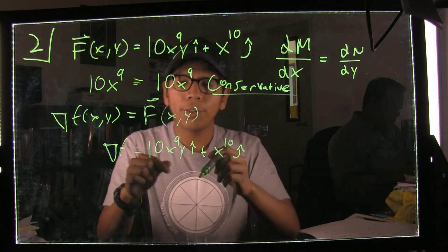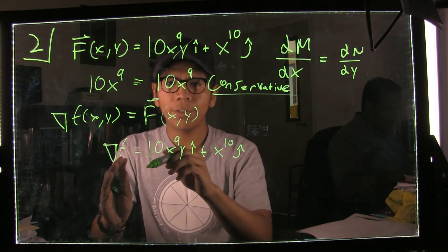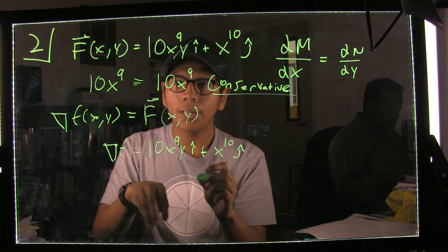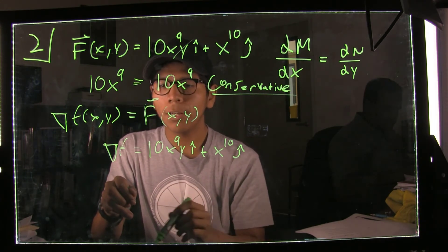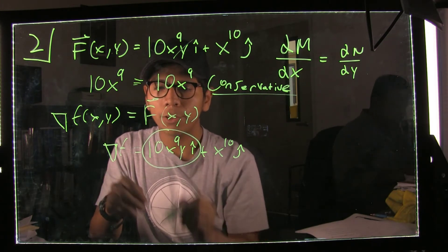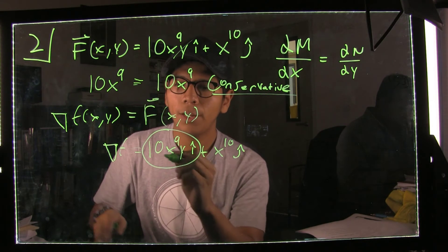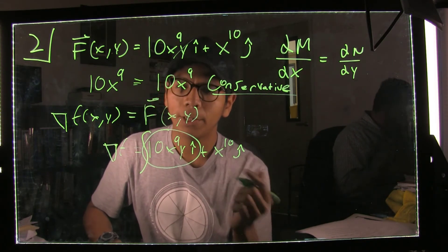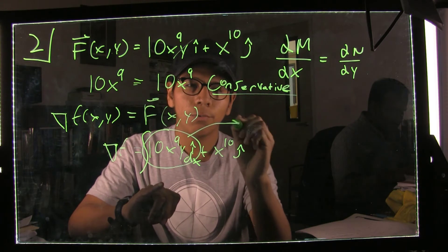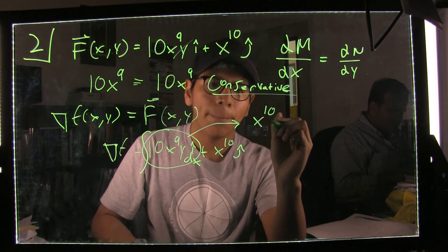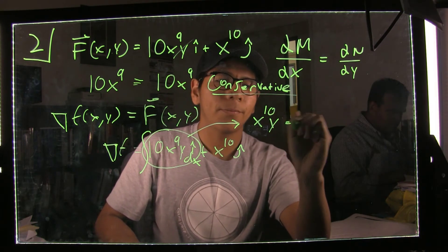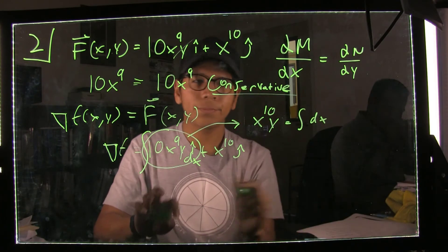Just like with the normal gradient, you take the partial with respect to x and place it in the i-component, and the partial with respect to y in the j-component. So working in reverse, starting with the i-component, we integrate with respect to x, keeping y constant. Integrating 10xy with respect to x gives us x to the 10th times y.